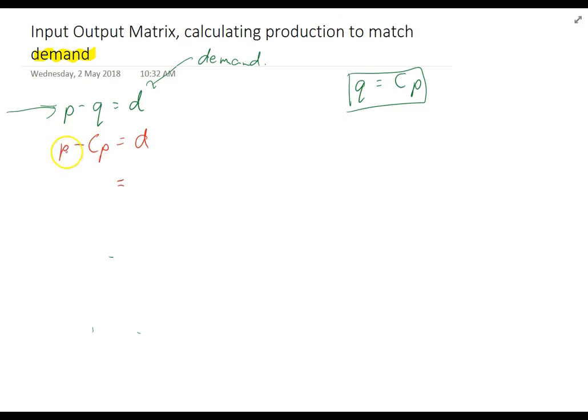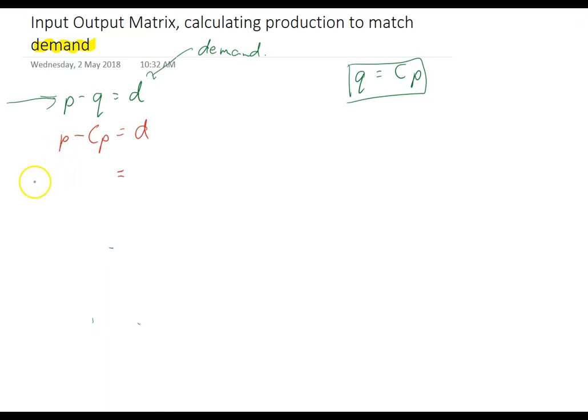Alright, and now we've got a small problem here because I'd like to factorise this to put P on the outside but to do it I'm going to need an identity matrix here. I'm just going to factorise this by putting P on the outside and then identity matrix is what's going to be left over minus C and that's going to be equal to demand.